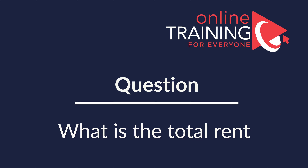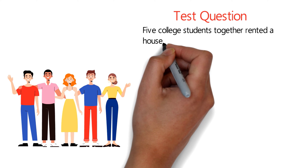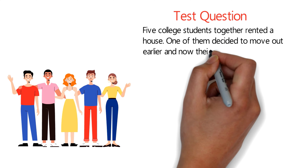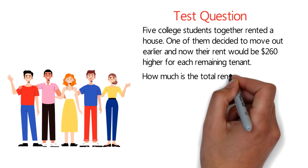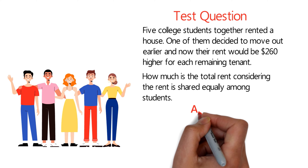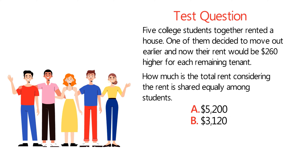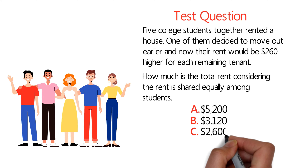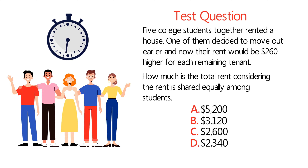Here's an interesting question — useful not just for the test but also if you're trying to rent a house. Five college students together rented a house. One of them decided to move out earlier, and now their rent would be $260 higher for each remaining tenant. What is the cost of the total rent, considering the rent is shared equally among students? Choices: A is $5,200, B is $3,120, C is $2,600, and D is $2,340. Give yourself 20 to 30 seconds.